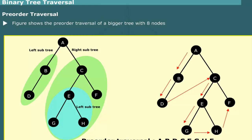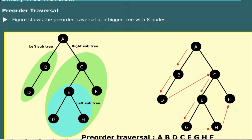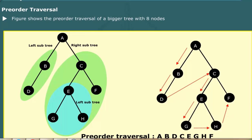This figure shows the pre-order traversal of a bigger tree with eight nodes. To traverse the tree in pre-order, we start at the root node A, then traverse the two nodes B and D in the left subtree T1. Then we move to the right subtree T2, which contains a left subtree T3. Next, we first visit the root node C of the right subtree, then traverse the root node E of tree T3. This is followed by visits to G and H. Last of all, we visit node F.